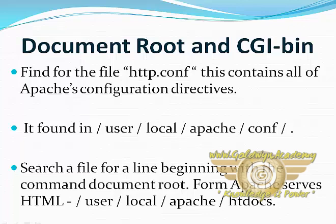DocumentRoot identifies the directory from which Apache serves HTML pages, typically /usr/local/apache/htdocs. This tells Apache that when it receives a request for a page in the cgi-bin location — for example, a request like http://www.myserver.com — we should place our scripts in a directory named using the ScriptAlias command, and our web pages in a directory specified by the DocumentRoot command.